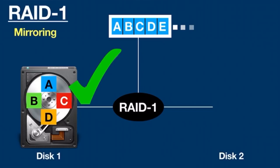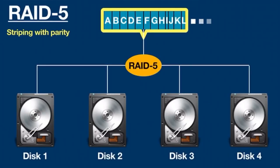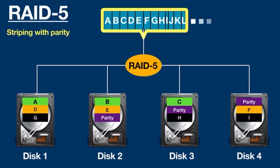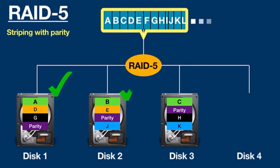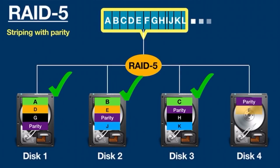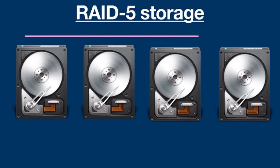RAID 1 is ideal for accounting systems. RAID 5 is the most common type of RAID level. It offers striping with parity, requires at least three drives but can work with up to 16. Data is striped across all the drives and parity is also spread across all the drives. Parity is used to rebuild data in case of a disk crash. RAID 5 can handle a single hard drive failure without losing data — just replace the broken drive and the storage controller will restore the data using parity information.